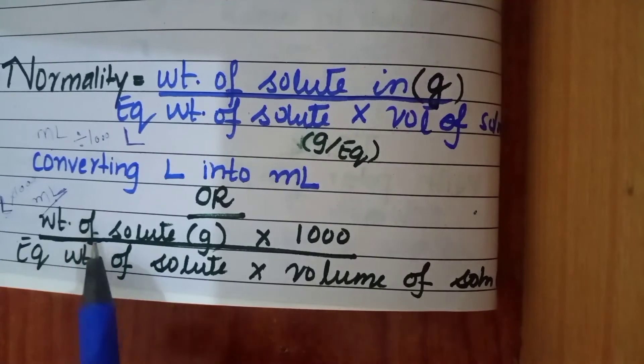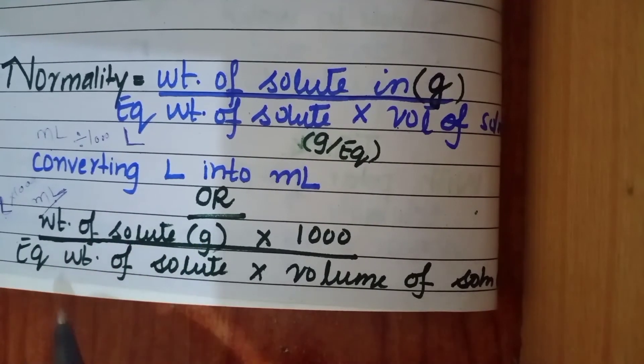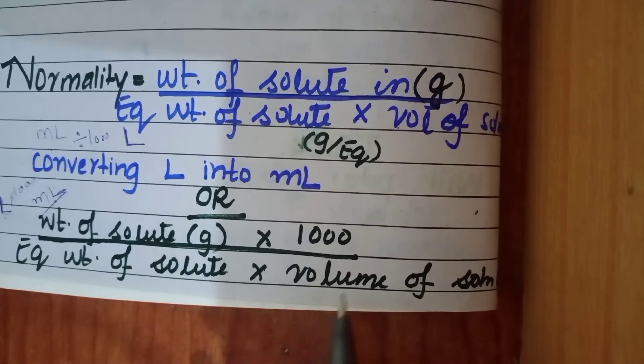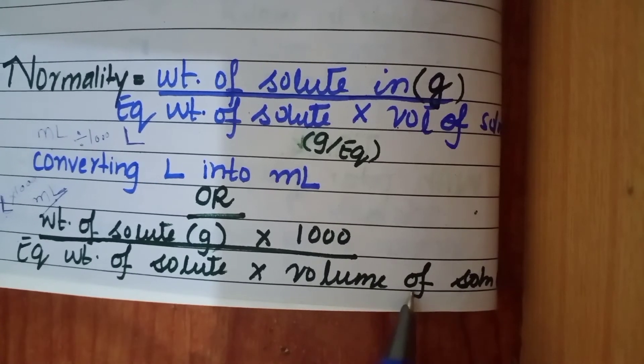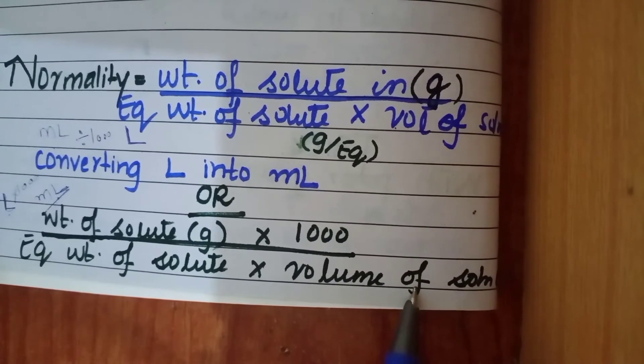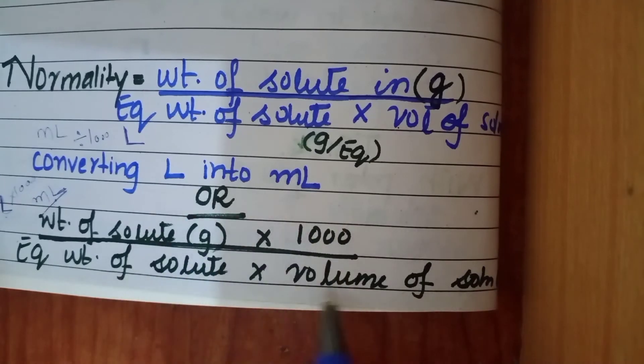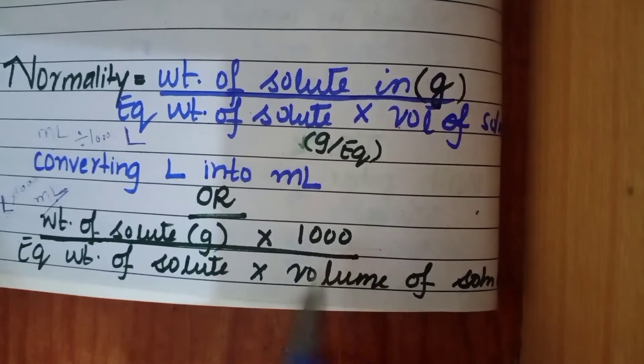So the formula comes out to be weight of solute in grams divided by equivalent weight of solute multiplied by volume of solution in milliliter. When we are going to take volume of solution in milliliter, we are going to multiply the entire thing with thousand.